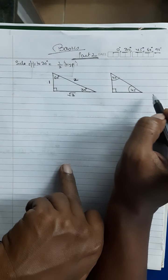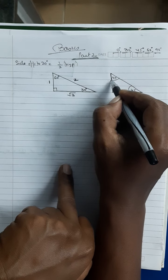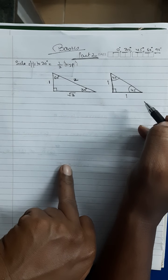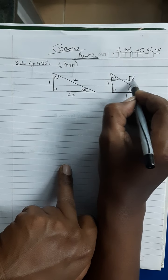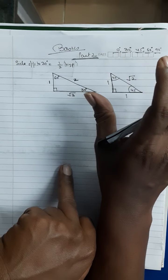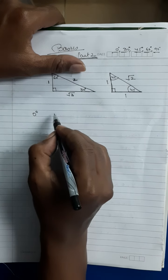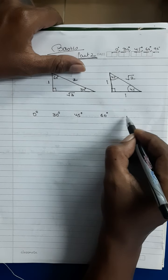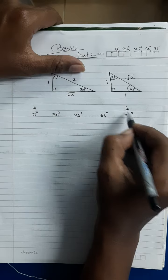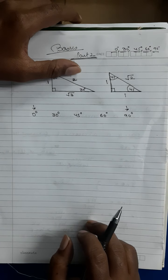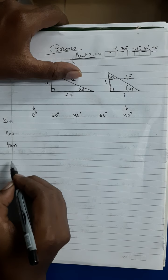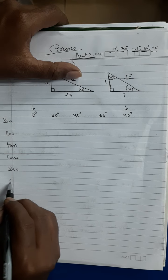For the 45-45-90 degree triangle, the two legs are congruent sides because they are opposite to congruent angles — both equal 1. Applying Pythagoras theorem gives the hypotenuse as √2. Once you remember both triangles, you can proceed. We will cover the angles 30°, 45°, and 60° first, then sin, cos, tan, cosec, sec, and cot.